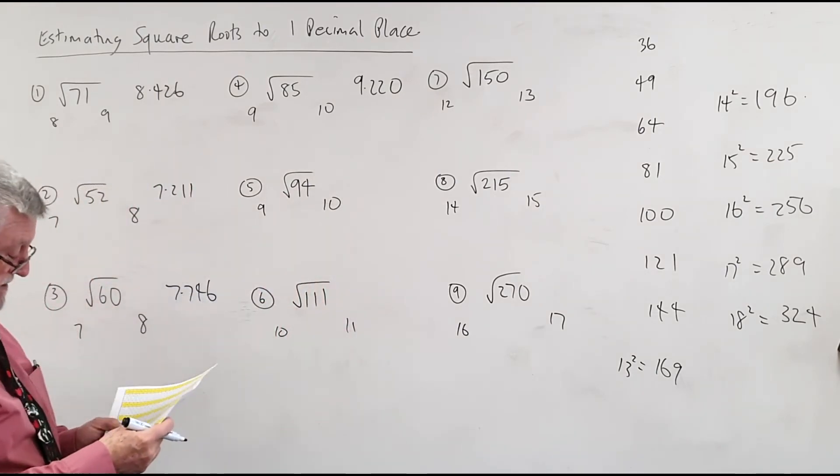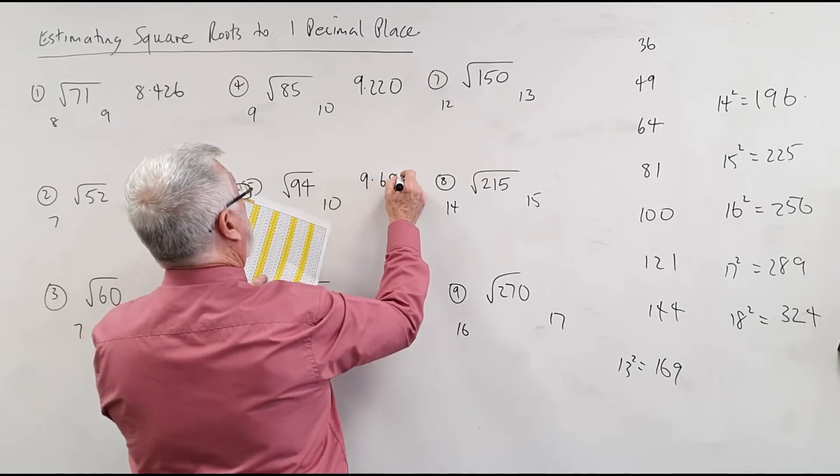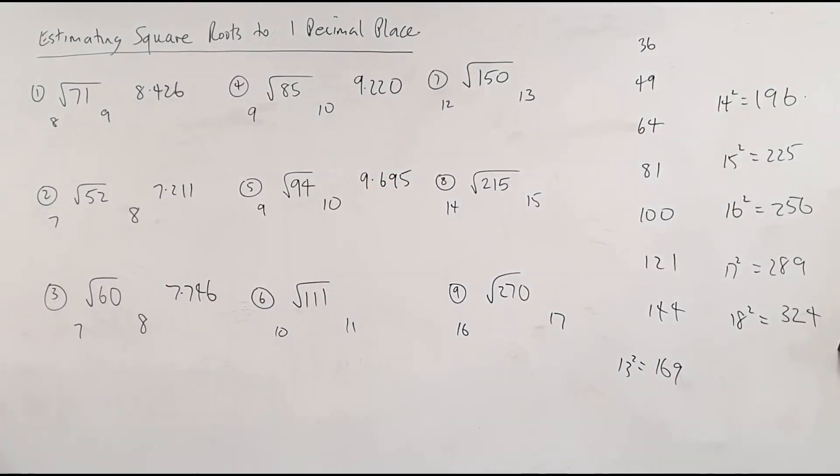94 is 9.695. Oh, 9.75. I went too high. I don't know if I could do that, but I'll do it in 10 seconds under pressure. I didn't do it in 10 seconds. You can get longer, that's okay, it doesn't matter.